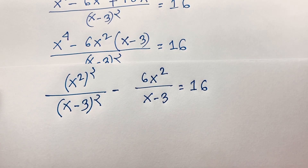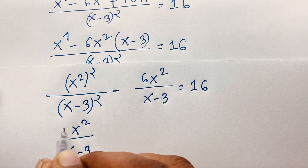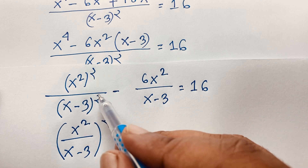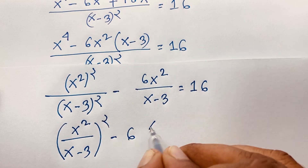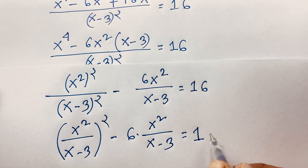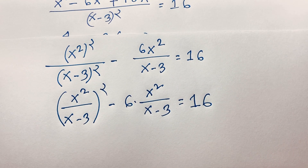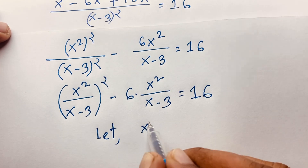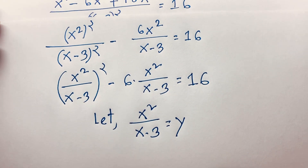Now I can rewrite x⁴/(x-3)² as (x²/(x-3))², using the exponential law (a/b)ⁿ. So the expression becomes (x²/(x-3))² minus 6·(x²/(x-3)) = 16. Let y = x²/(x-3).